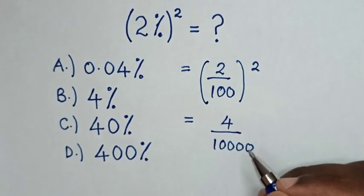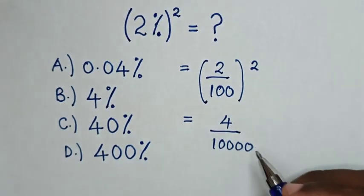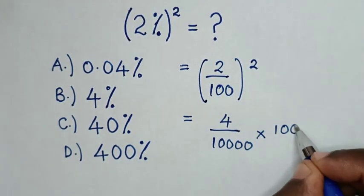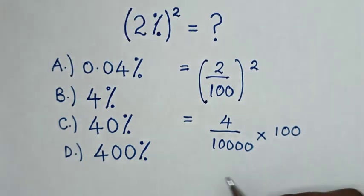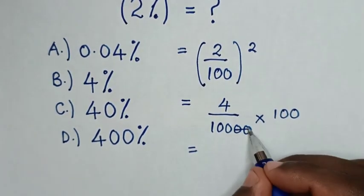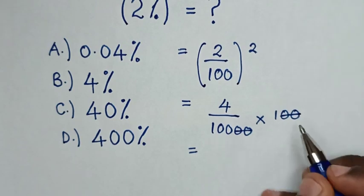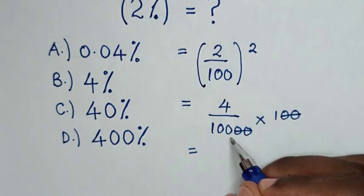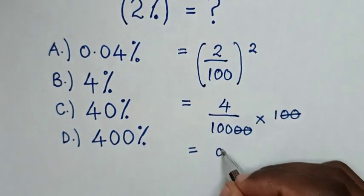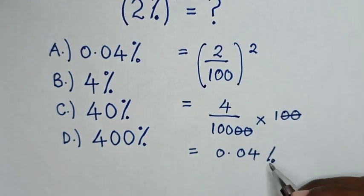Then we change this into percent, so we multiply by 100. Then it will be equal to — to simplify, these two zeros will cancel with these two zeros, so it will be 4 over 100 percent, which is the same as 0.04 percent.